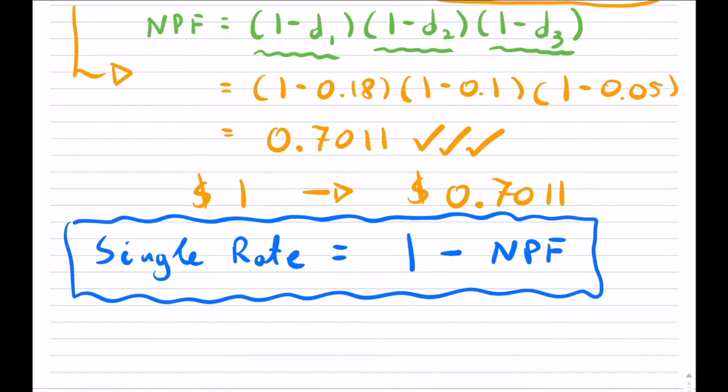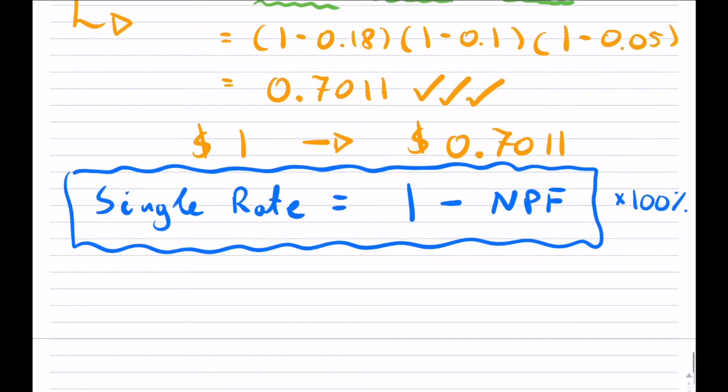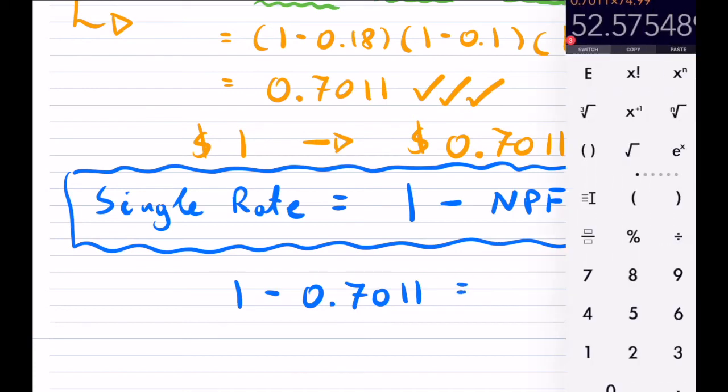And if you want it as a percent, you multiply it by 100%. So for example, in this case, our single equivalent rate would be 1 minus 0.7011, and we can find out what that is.